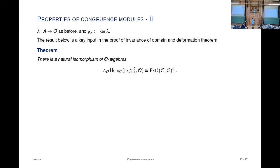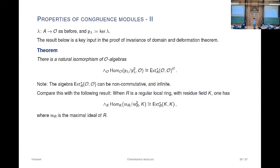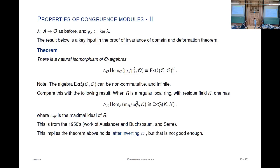The Ext algebra before you take the torsion-free quotient can be highly noncommutative and infinite unless the ring is regular. You should compare this result with the following, which goes back probably to Serre's local algebra: if you have a regular local ring with residue field K, the Ext algebra of the residue field is an exterior algebra on the Zariski tangent space. This result implies the torsion-free quotient statement holds after inverting the uniformizer, but you lose torsion information—and it's interesting that you get it on the nose without inverting.